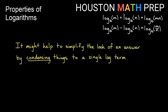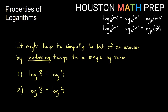If we have addition between logs, we make a single log with multiplication. If we have subtraction between logs, we make a single log with division. Condensing means taking multiple log terms and making them into a single log term using these properties. Let's look at some examples.